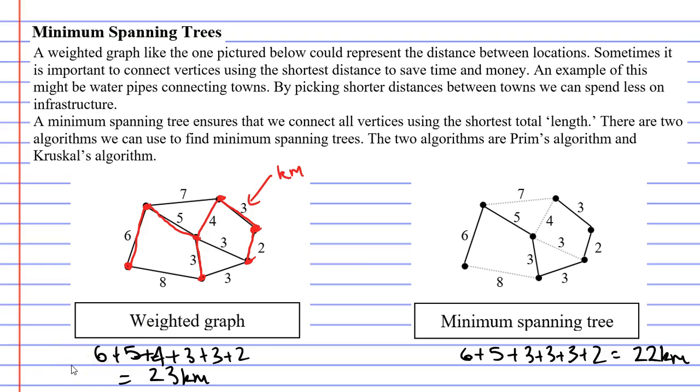Now if we want to figure out what the minimum spanning tree is, there are two algorithms that we can use. They are called Prim's algorithm and Kruskal's algorithm, and we're going to go through that in some later examples.